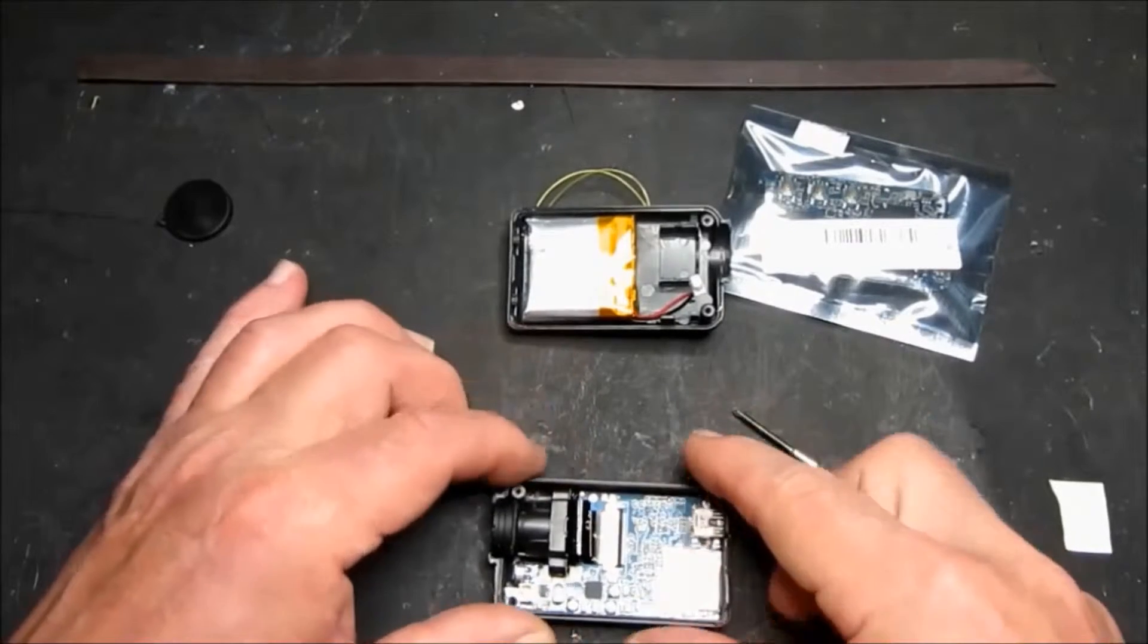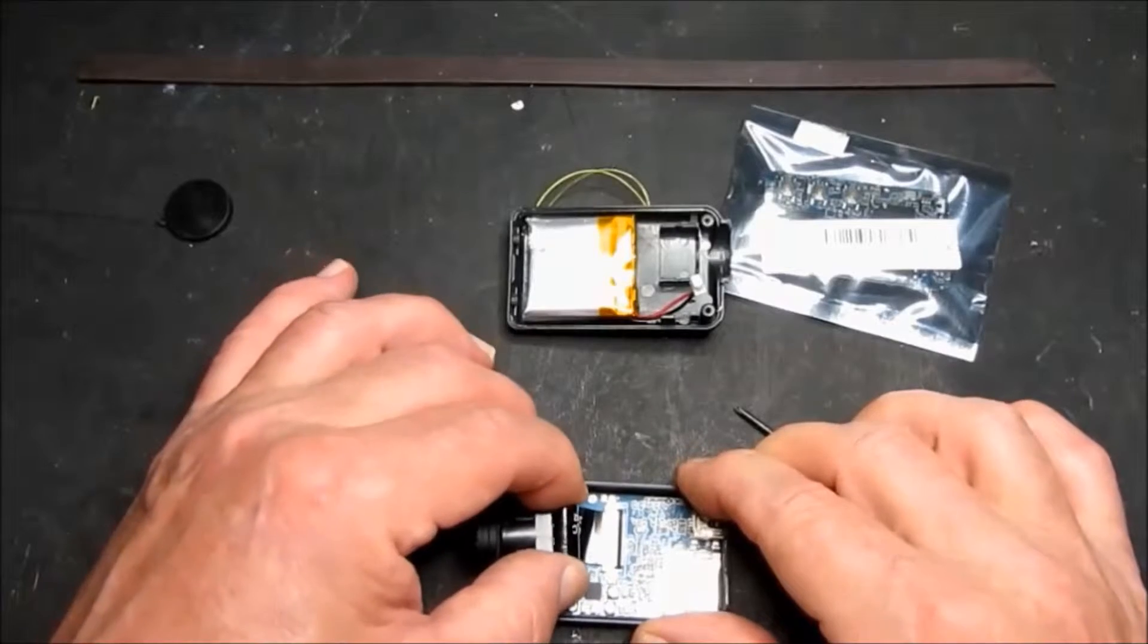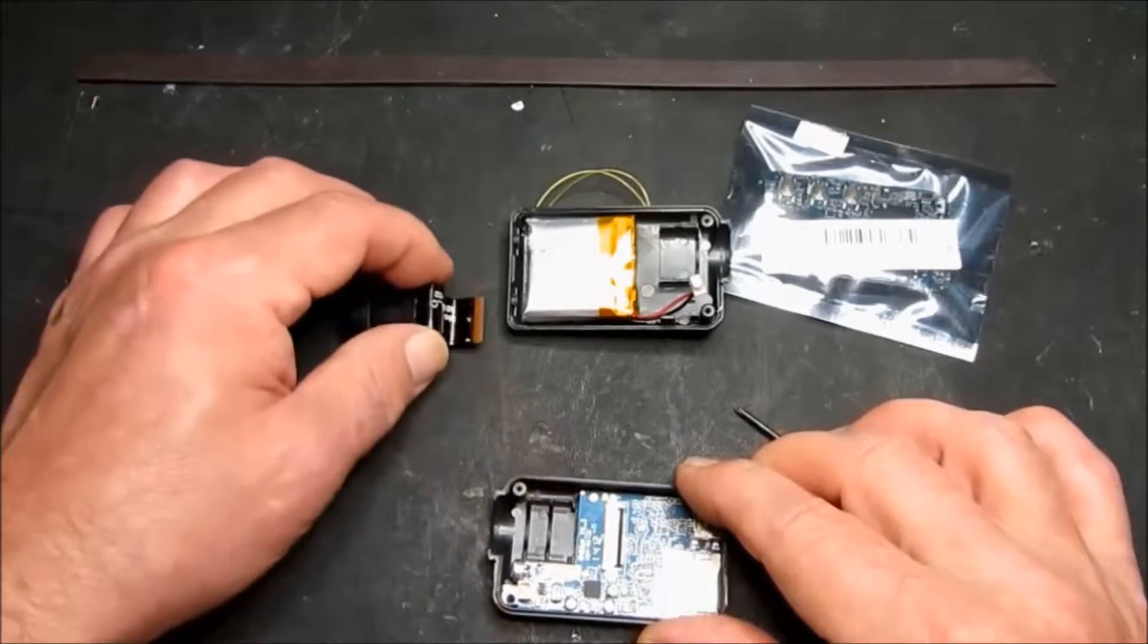Having released that we pull up the lens module and then the little ribbon cable just comes out like that.